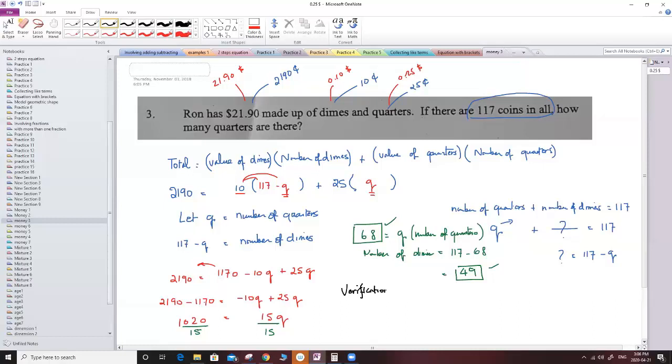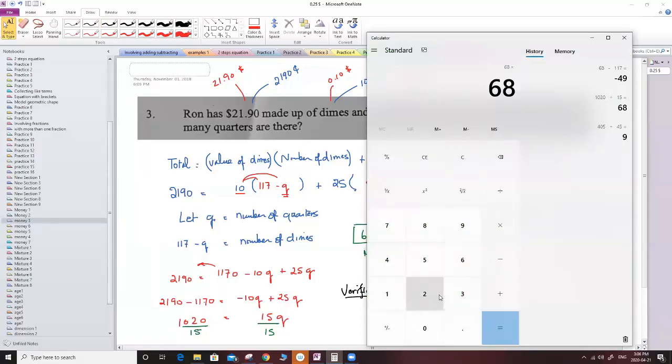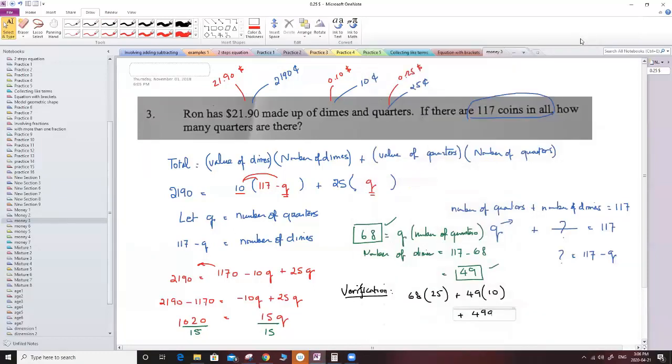So verification, I'm going to say I have 68 quarters, that means times 25 cents, plus I have 49 dimes which means 10 cents. So the total here is 490, and 68 times 25 is 1,700. Now if I add both of them, I'm going to get 0, 9, 7, 4, 11, 1 into 2,190, and don't forget cents, this is my original price, and this is to make sure that my solution about the 68 and the 49 are correct numbers. Thank you for listening.